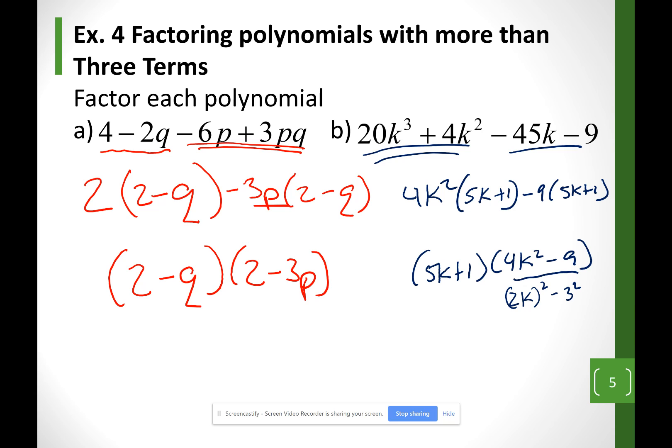So my answer at the end, the 5K plus 1, my first parentheses, I'm not going to do anything to it. So 5K plus 1, my second parentheses, I'm going to split it up because I have the difference of the squares. I'm going to split it up as 2K plus 3 and 2K minus 3.